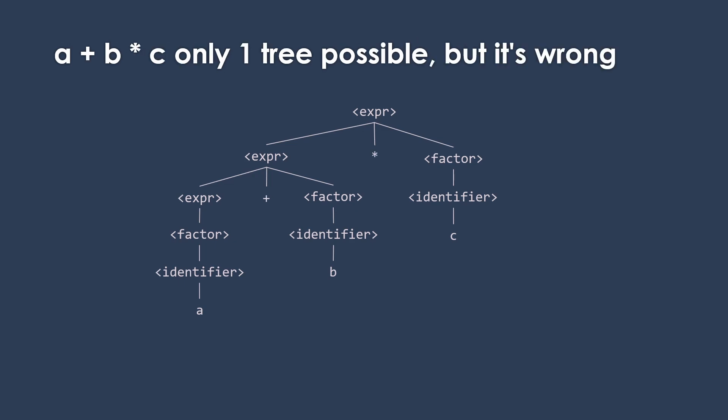For A plus B times C, we also have only one tree possible at this point. But it's wrong because we're working from left to right, and we want to do the multiplication first even though it's on the right. So we need to do a little more fixing of our grammar.